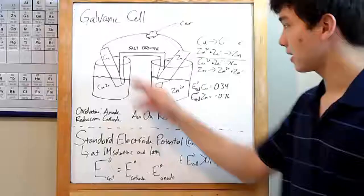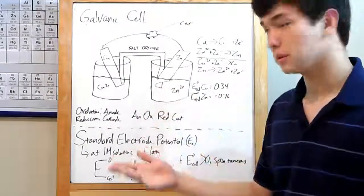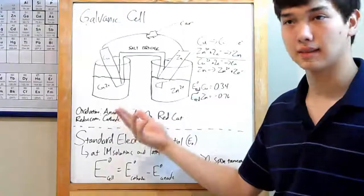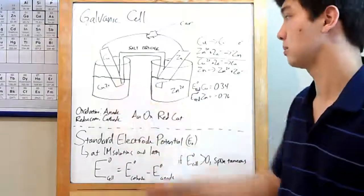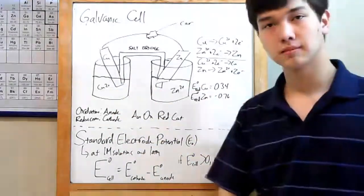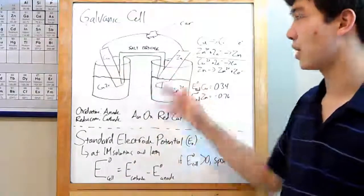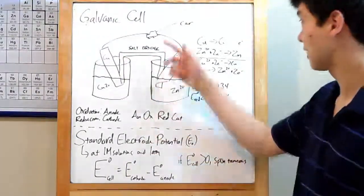There are several parts to it. There are your metals. These will be dipped in a solution containing the same metal as an ion, Cu and Cu2+, Zinc and Zinc 2+. The metals themselves are connected by a wire which runs through whatever they're powering, like your car.